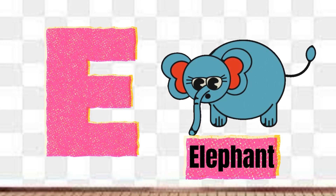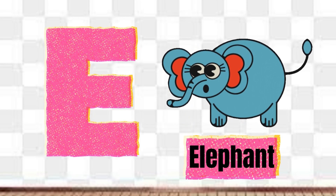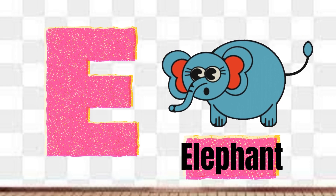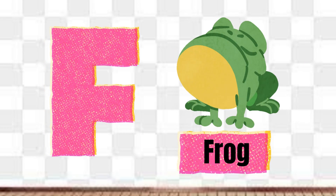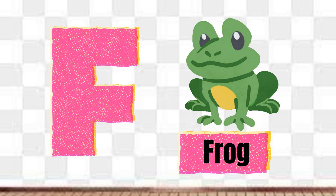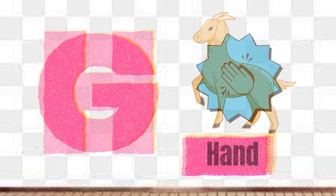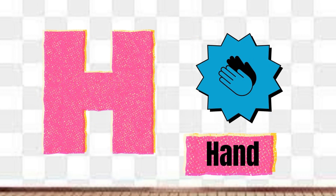E is for Elephant, E-E-Elephant. F is for Frog, F-F-Frog. G is for Goat, G-G-Goat. H is for Hand, H-H-Hand.